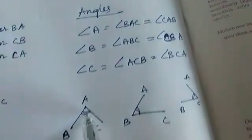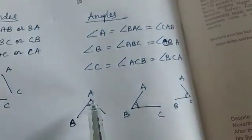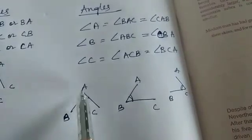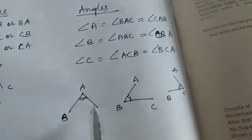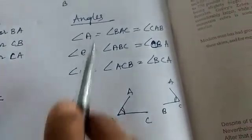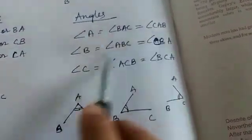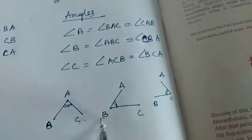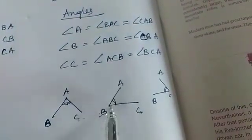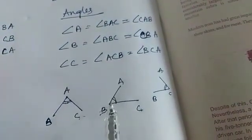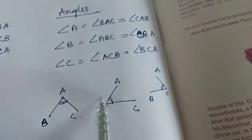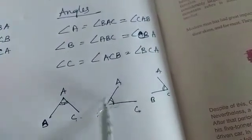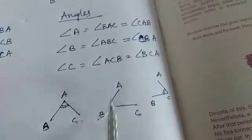These corners are known as the angles. You can name angle A as angle A, or BAC, or CAB. Remember that the angle we want should be the middle part — the vertex must be in the center.